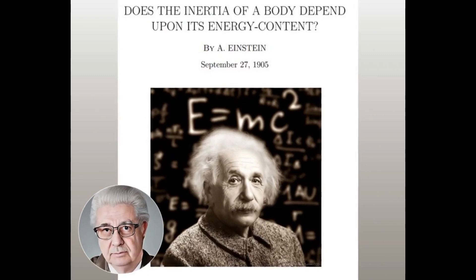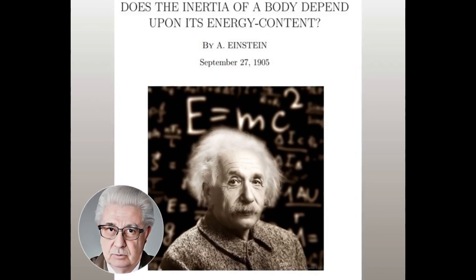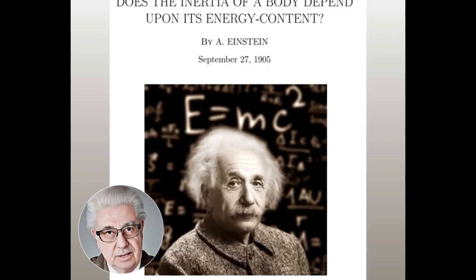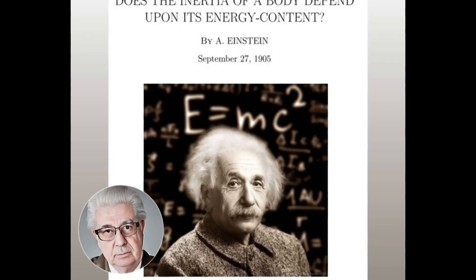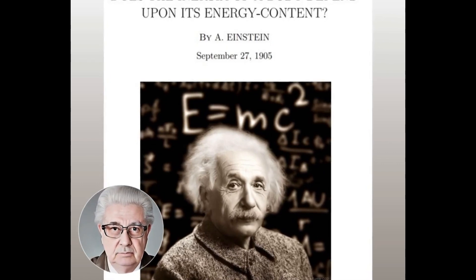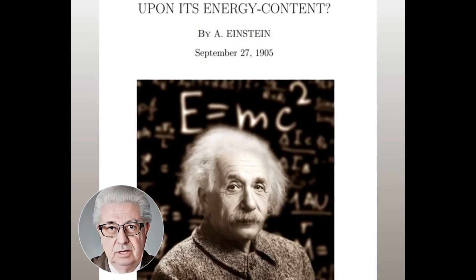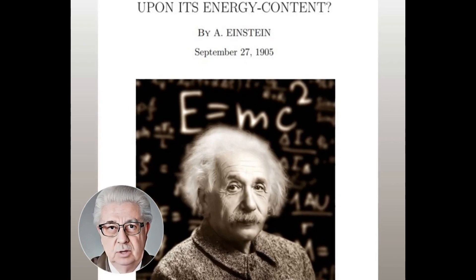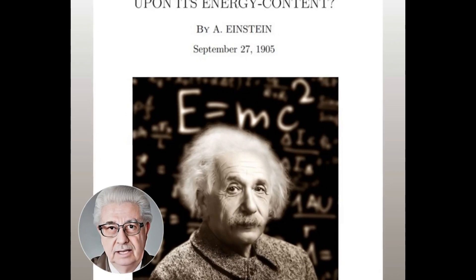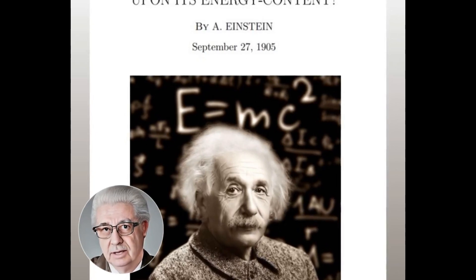About this document: this edition of Einstein's 'Does the inertia of a body depend upon its energy content' is based on the English translation of his original German language paper, published in Annalen der Physik, volume 18, page 639, year 1905, which appeared in the book 'The Principle of Relativity,' published in 1923 by Methuen and Company, LTD, London.